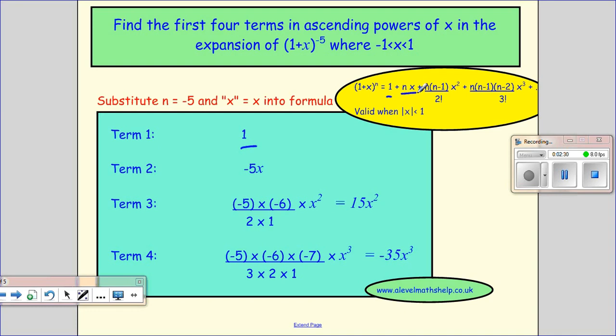Second one is n times x. n was minus 5 times x. Term 3 is n times (n minus 1), so minus 5 and minus 5 minus 1 gives you minus 6, over 2 factorial, that's 2 times 1, times x squared.